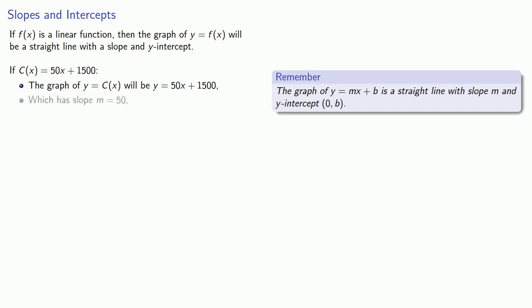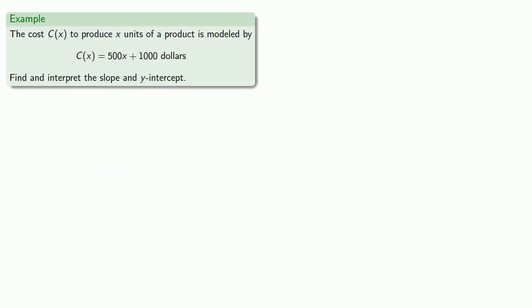This graph will have slope m equal to 50 and a y-intercept of (0,b). So for example, let's go back to our cost function, c(x) equals 500x plus 1000. Let's find and interpret the slope and the y-intercept.